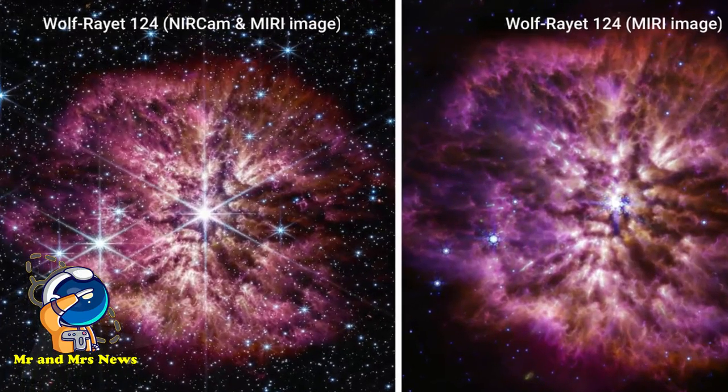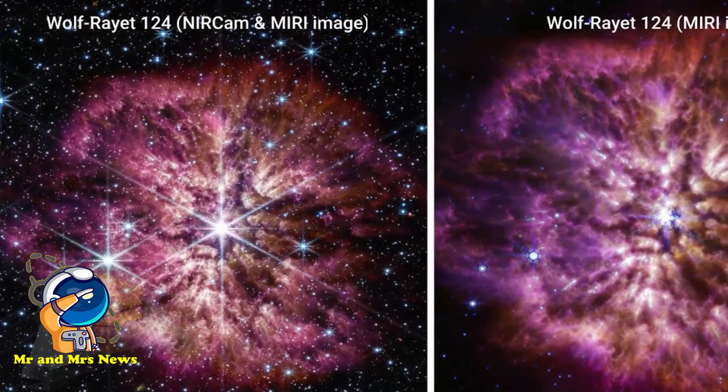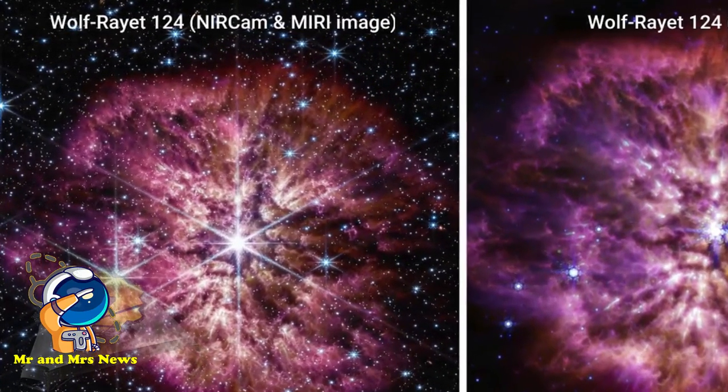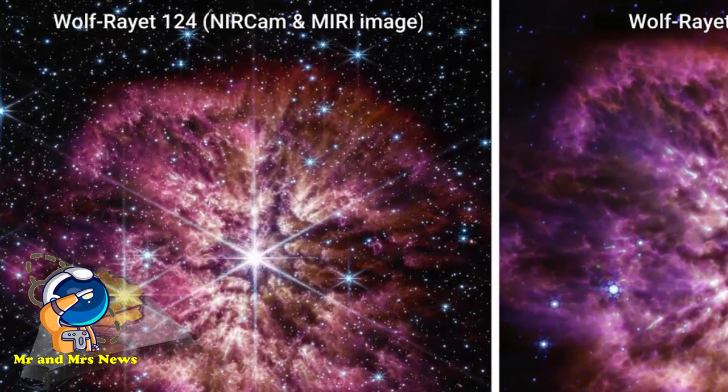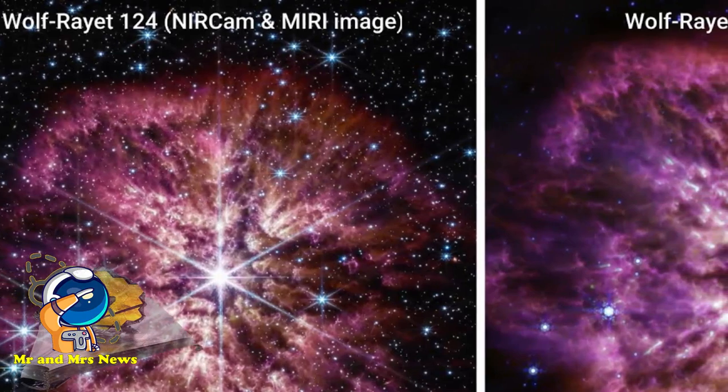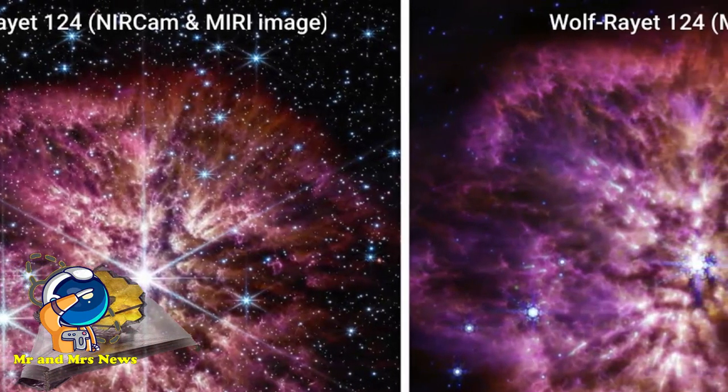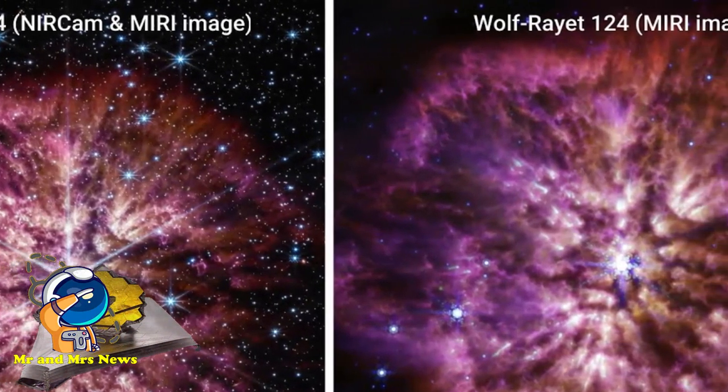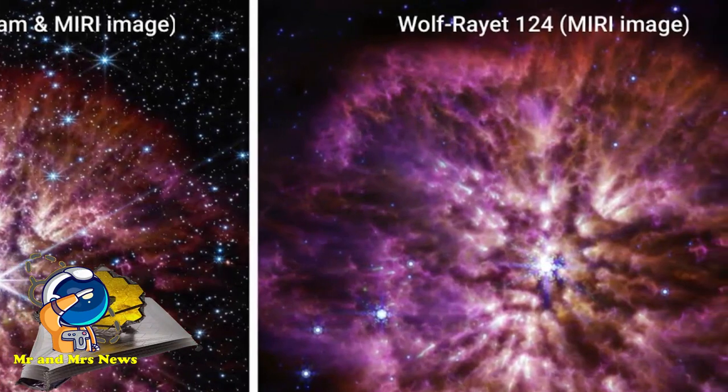Teleskop luar angkasa James Webb menangkap bintang WR-124 dalam detail yang belum pernah terjadi sebelumnya dengan instrumen-instrumen inframerah. Jarak bintang Wolf-Rayet 124 berada di konstelasi Sagittarius yang berjarak sekitar 15.000 tahun cahaya dari bumi.